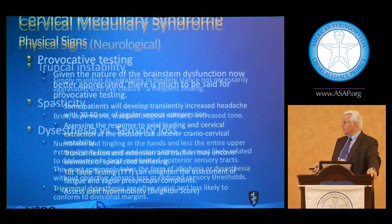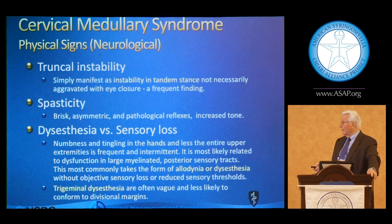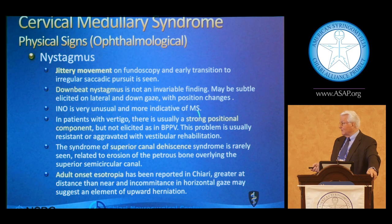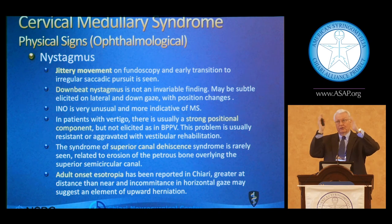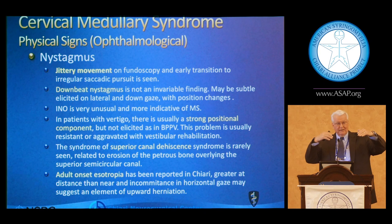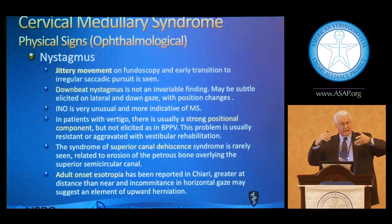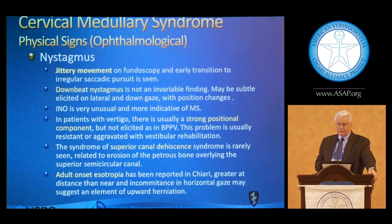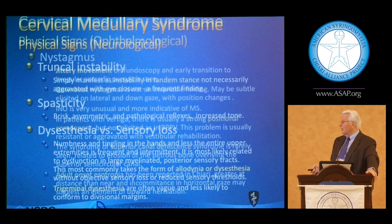INOs, or internuclear ophthalmoplegia common in MS, are very rarely seen in Chiari. But there can be an interesting adult-onset esotropia on upgaze — when patients look up their eyes tend to converge with incomitant movements on cover testing. There's also a rare syndrome of superior canal dehiscence syndrome from pressure in the posterior fossa, where unroofing of the superior semicircular canal — when you cough or sneeze — can cause a flow change giving the patient a rolling sense of vertigo or tumbling sensation.